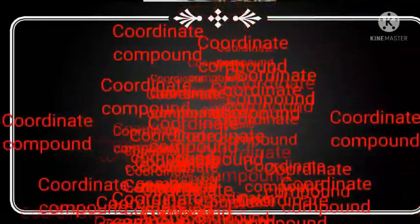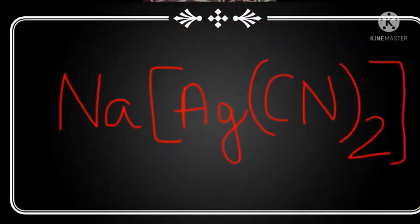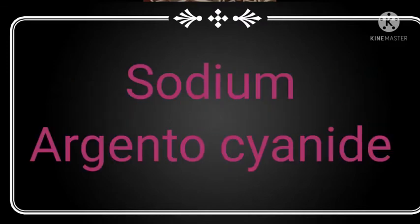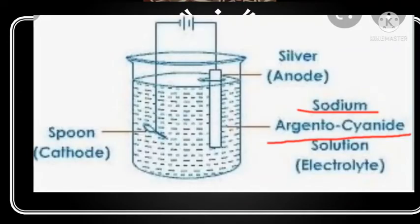Good day everybody. Today we are going to proceed with the topic coordinate compound Na[Ag(CN)2], sodium argento-cyanide. We all are familiar with this salt. We have used this salt in electrolysis or electroplating of silver.